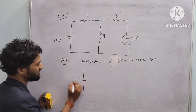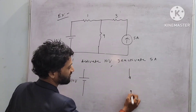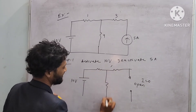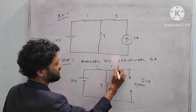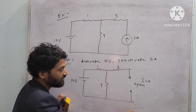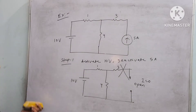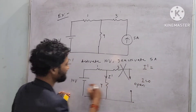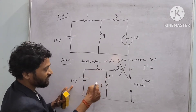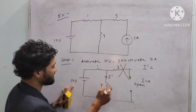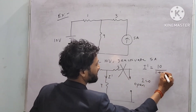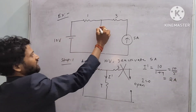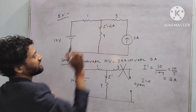Activation means keep the source as it is; deactivation of the current source means open the terminal to make current 0. With the current source open, only 1 ohm and 4 ohm are in series (3 ohm branch has no meaning). So total resistance = 1 + 4 = 5 ohm. I dash = 10/5 = 2 ampere. By activating the 10 volt source we get 2 ampere.